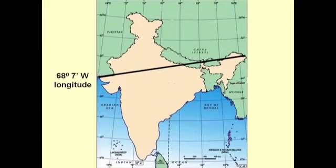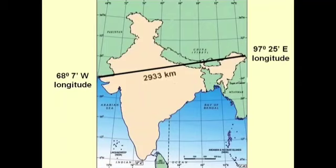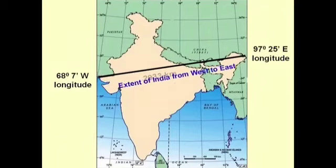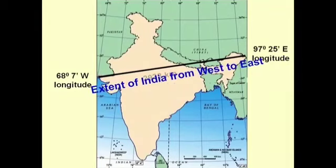India is the 7th largest country according to land mass. The area of our country is 3.28 million square kilometers. Its land boundaries are 15,200 kilometers.